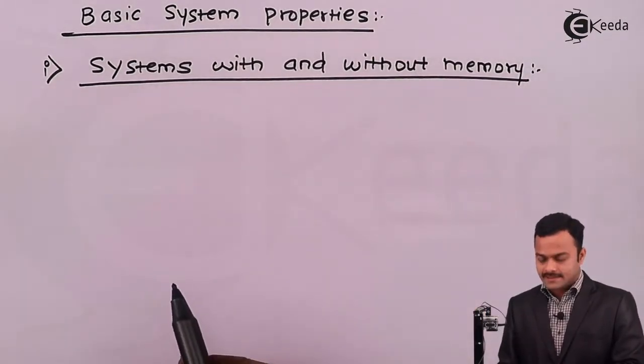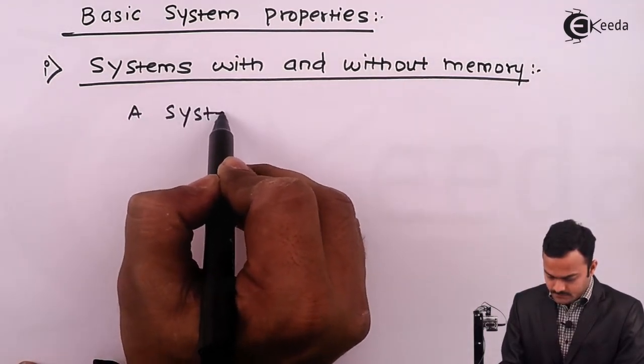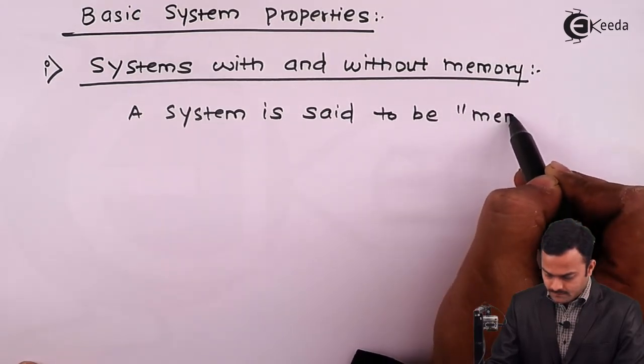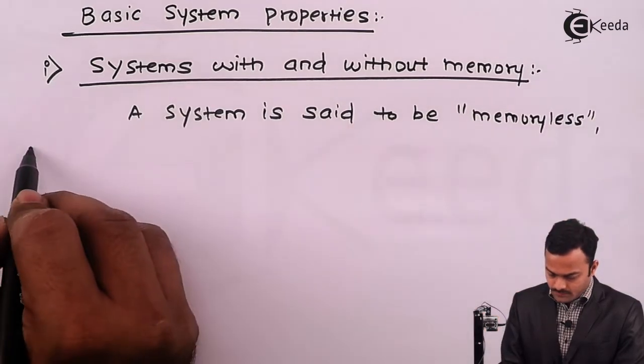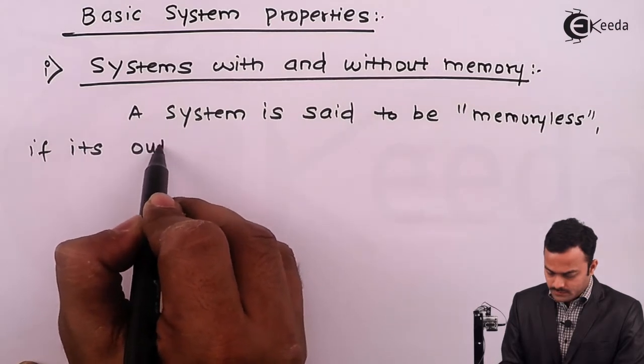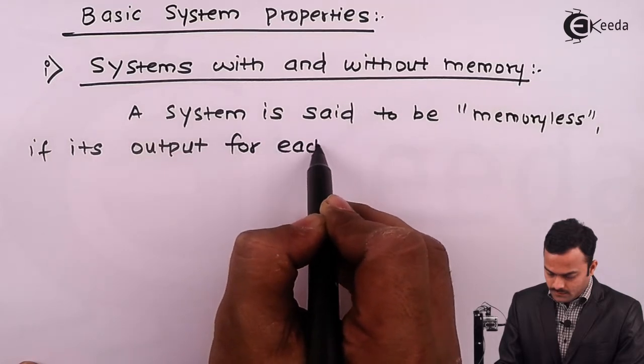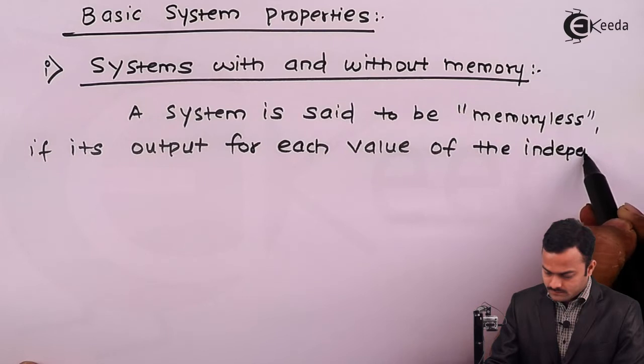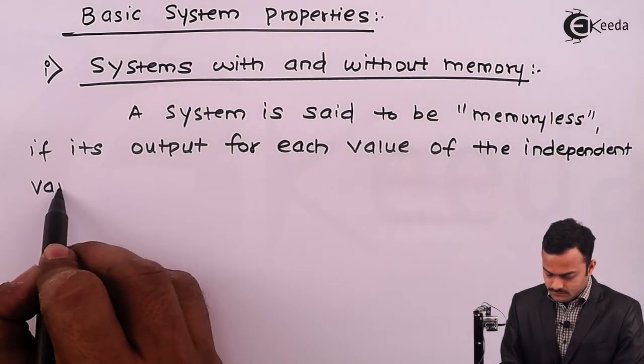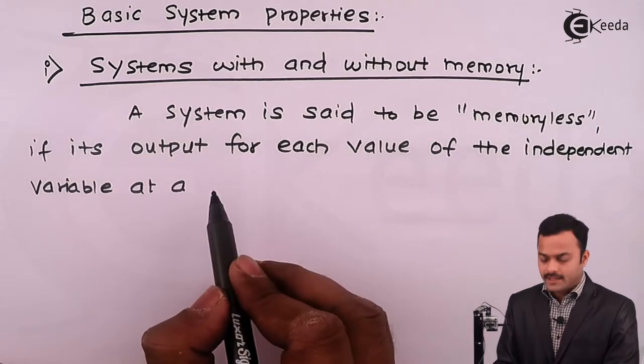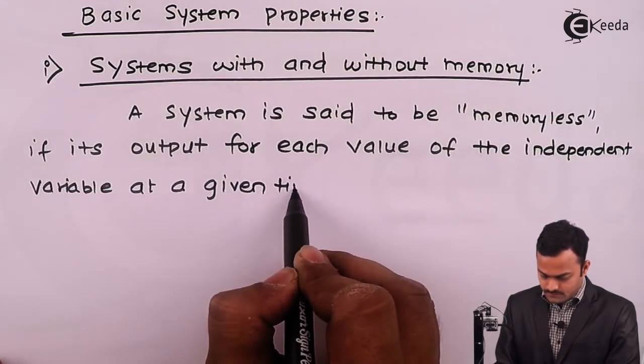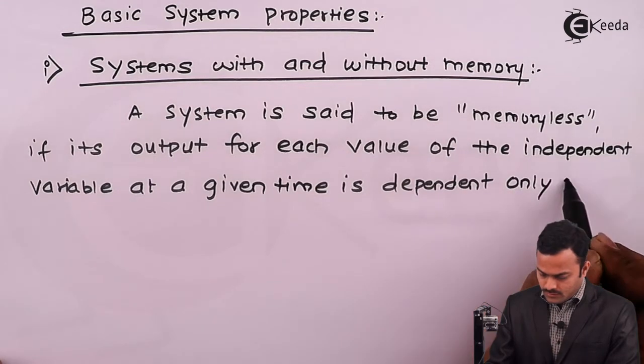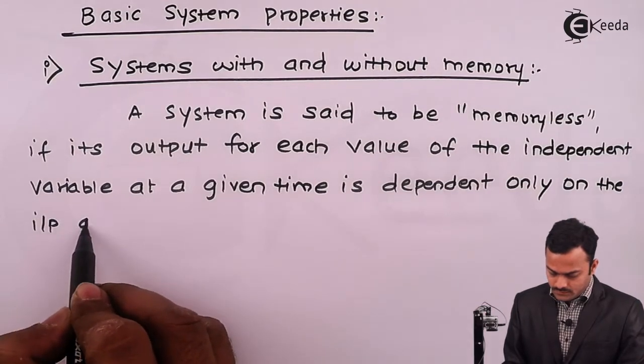Let's define a system which is memoryless. A system is said to be memoryless if its output for each value of the independent variable at a given time is dependent only on the input at that same time.